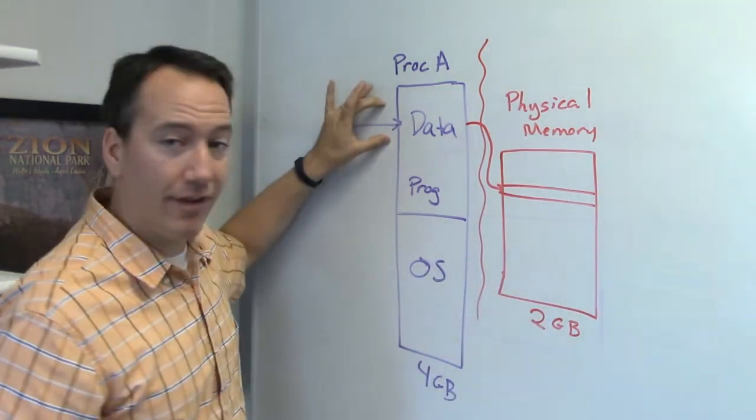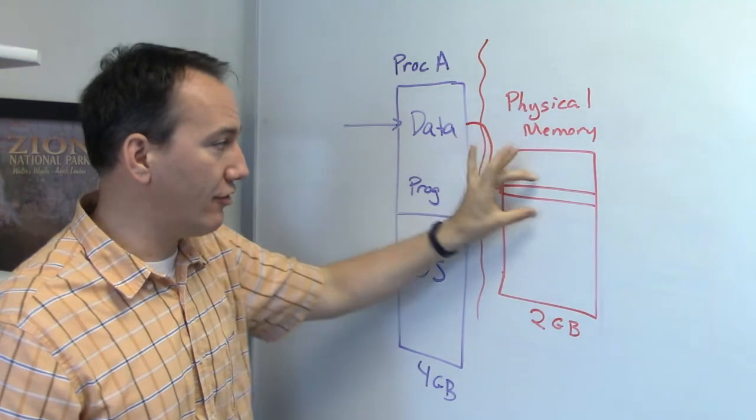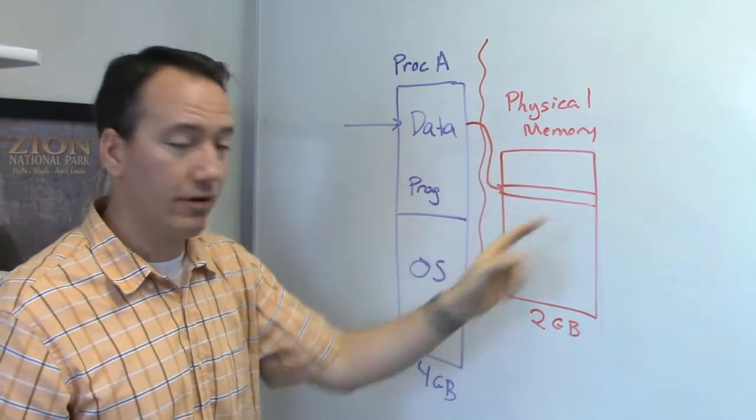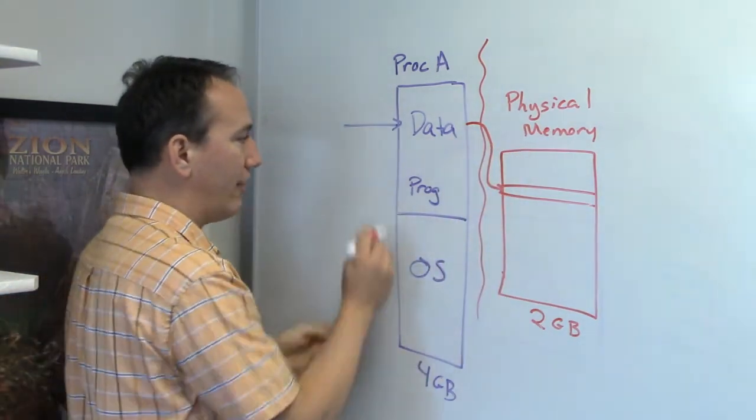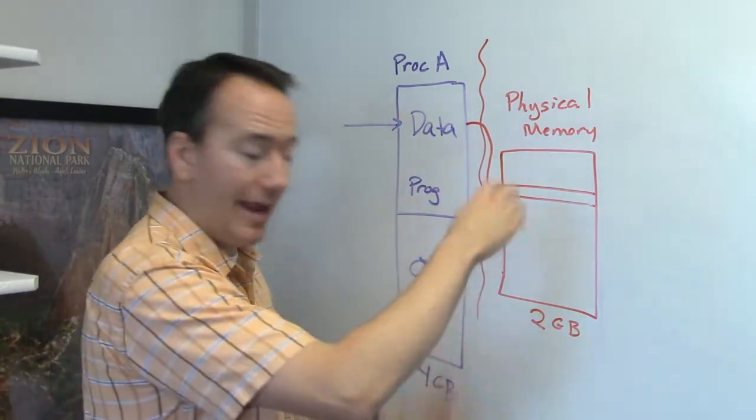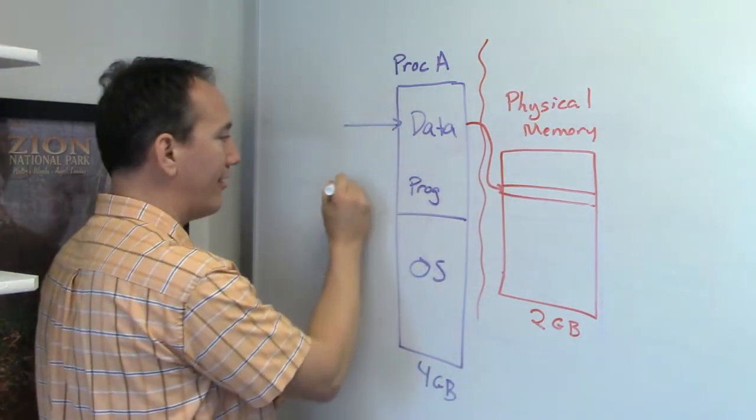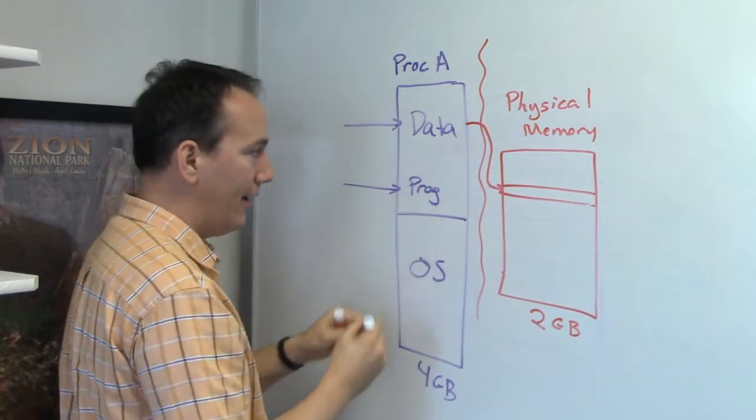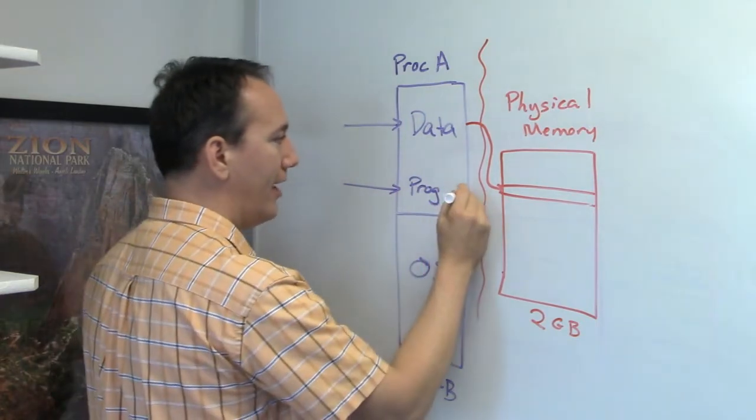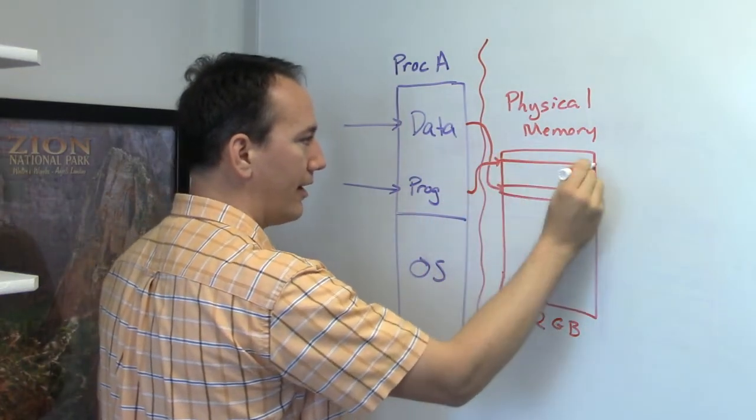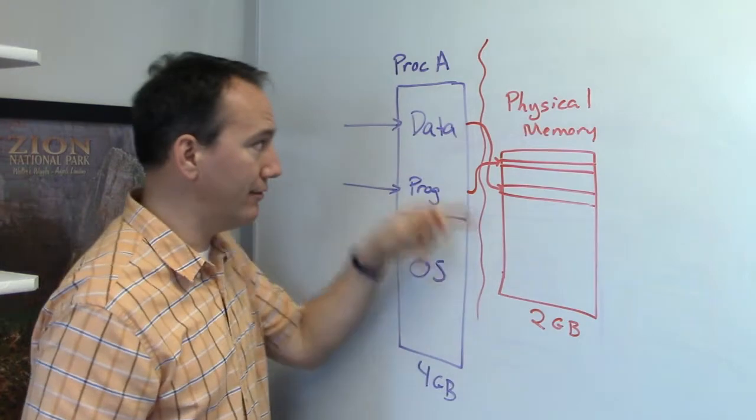So even though I'm using this address in my code, it's getting translated by the hardware into a physical location. Now these locations don't have to have any relation to each other. So I might access this memory right here, and that's going to come out the other end and access a page maybe in a completely different location relative to the other address.